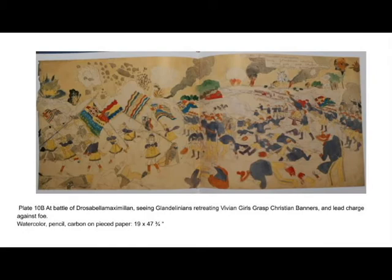In plate 10B, the composition seems to be more chaotic. Darger seems to have played with scale. The color schemes seem to bring focus on the Vivian girls, the flags they are holding, and the Christian soldiers they are leading into battle. The land is left mostly uncolored, with very little saturation in those parts that are colored. The Glandolanian soldiers appear in their gray Confederate-like uniforms, with their neutral colors making them appear to sink into the background, almost as if their importance is of lesser value. It is possible Darger uses this style of coloring to show a hierarchy in his work — perhaps subconscious, but it appears to be mostly consistent.